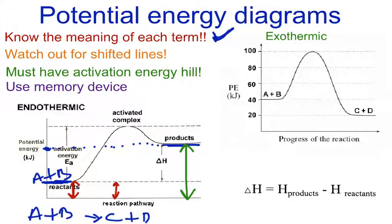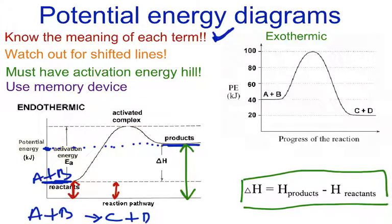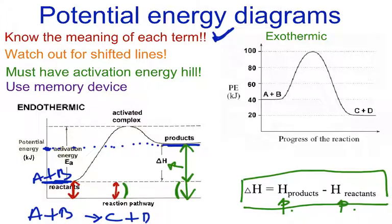We have this term called change in enthalpy or change in heat content. To find a change in enthalpy or delta H, you simply take the heat of the products and subtract the heat of the reactants from that. So if we subtracted this red arrow value from this value here and we subtract those two, we would end up with this line right here, which is represented by delta H. So what happens when you always subtract products take away the reactants, you wind up with your delta H — your changing heat content or changing enthalpy.